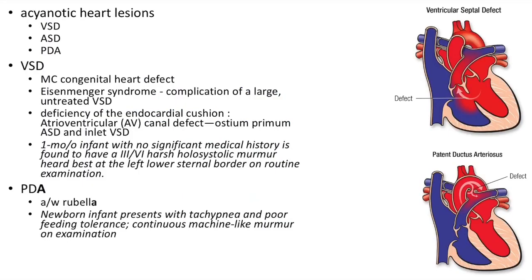Acyanotic heart lesions include ventricular septal defect, atrial septal defect, and patent ductus arteriosus. VSD is the most common congenital heart defect. There will be left-to-right shunt; as the disease progresses, increased pulmonary resistance leads to right-to-left shunt — known as Eisenmenger syndrome. Deficiency of endocardial cushion can lead to AV canal defects like ostium primum ASD and inlet VSD.